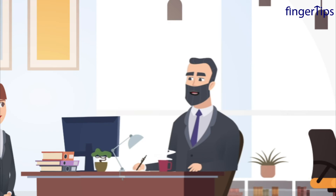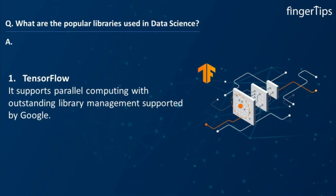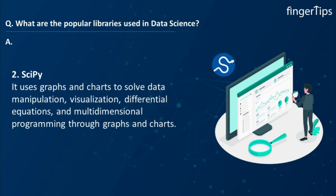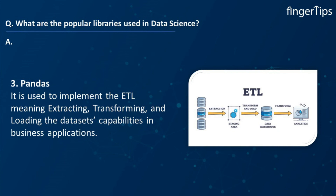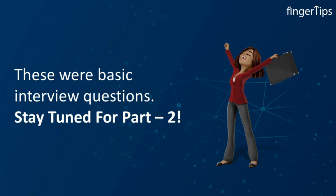What are the popular libraries used in data science? A few of the most popular libraries used for data extraction, cleaning, visualization, and deploying data science models are: first, TensorFlow, which supports parallel computing with outstanding library management, supported by Google; next, SciPy, which mainly uses graphs and charts to solve data manipulation, visualization, differential equations, and multi-dimensional programming; third, Pandas, which is used to implement ETL — meaning extracting, transforming, and loading data sets — capabilities in business applications; and finally, Matplotlib, which is free and open source and can be an alternative for MATLAB, resulting in better performance and lower memory consumption.